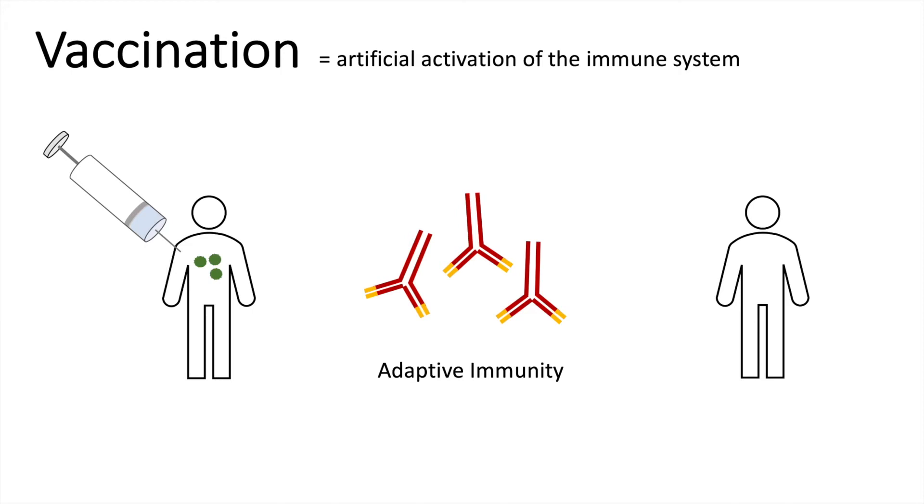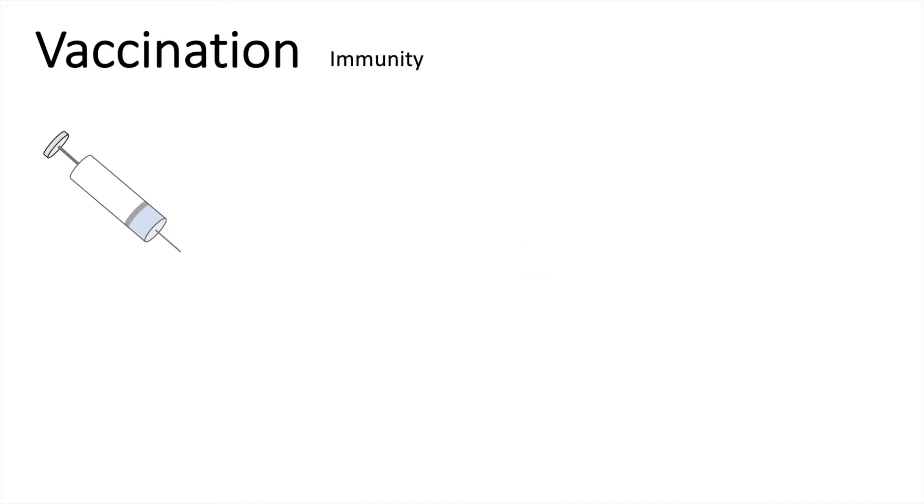That was just the basic overview about vaccination and we will jump into some details soon. First I'd like to show you two different types of immunity. There is active immunity and passive immunity.